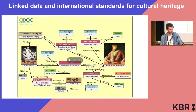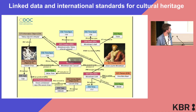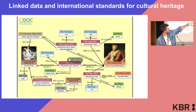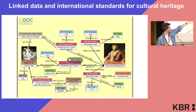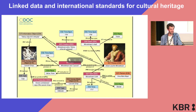It's very much based on the CIDOC CRM standards, which is a model that makes use of RDF. It makes use of the idea of triples, where you have two concepts — in this case, the person Joachim Winckelmann and a human-made object, the Laocoön group. By use of triples you can connect these two different concepts, which is of course the whole idea of linked open data.